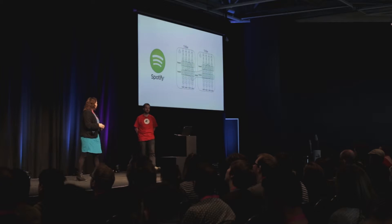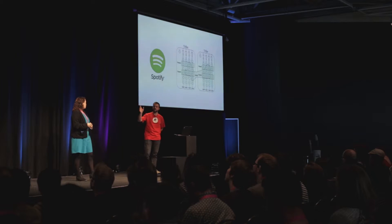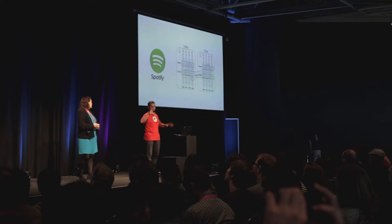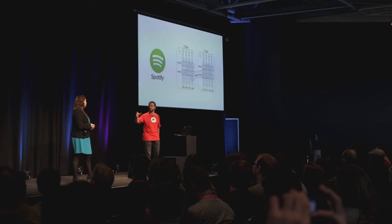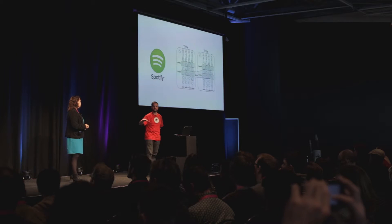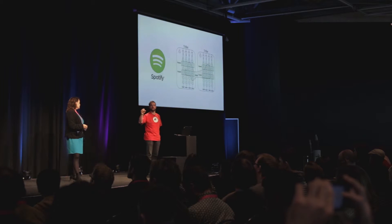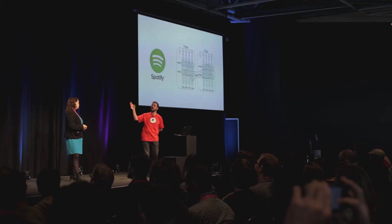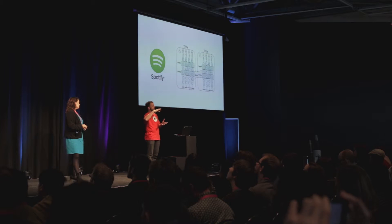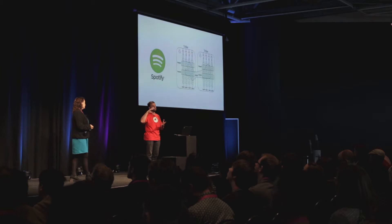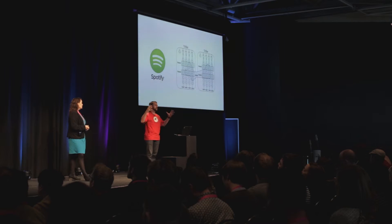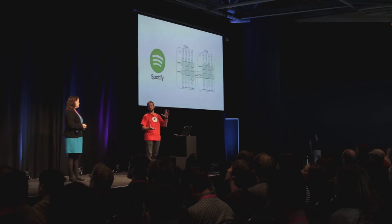The diagram there shows the way the teams are structured, and we use the words throughout the rest of the presentation: squads, tribes, guilds, and chapters. A squad is the project team — the minimum set of people that can get something done — and the tribe is oriented into business unit groups.